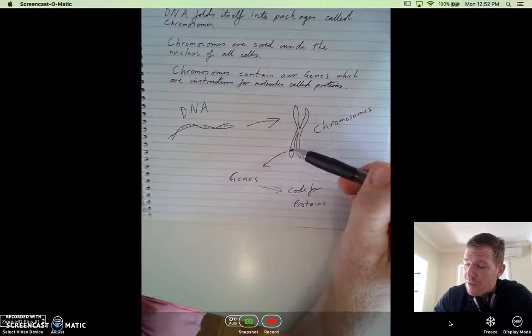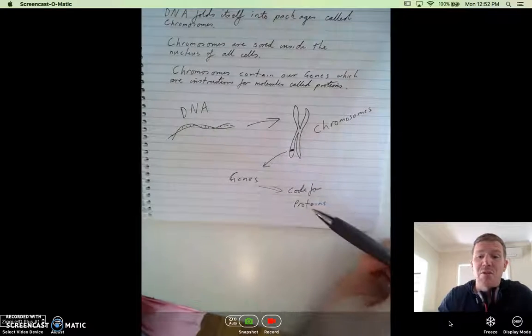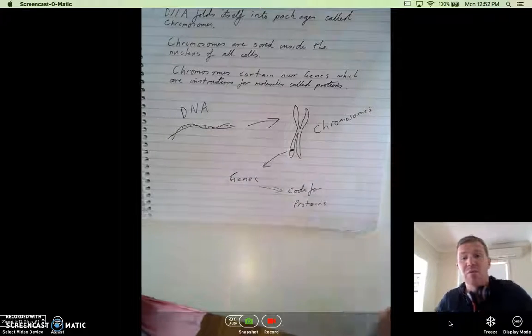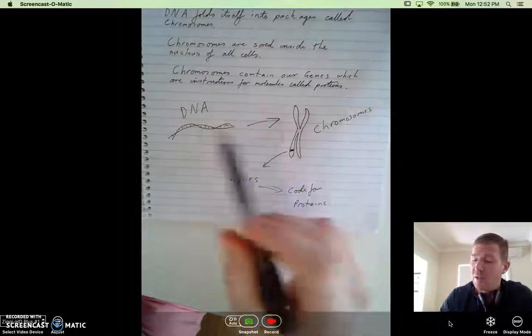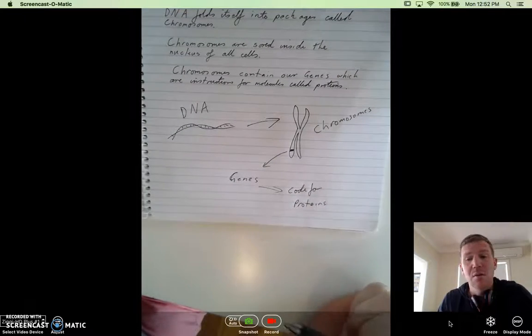On each chromosome, there's a series all the way up and down called genes. And these genes are instructions, basically, to build proteins. And proteins are what makes up our body. So they make up the individual things, hormones, cells, all those types of stuff. So DNA forms chromosomes. Chromosomes have genes on them. And genes produce our proteins.